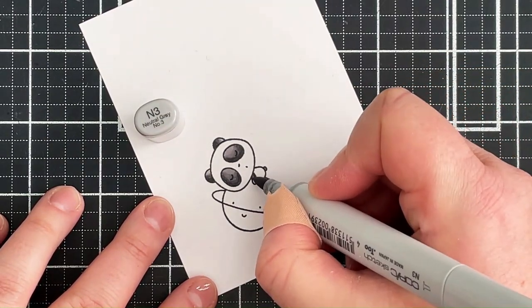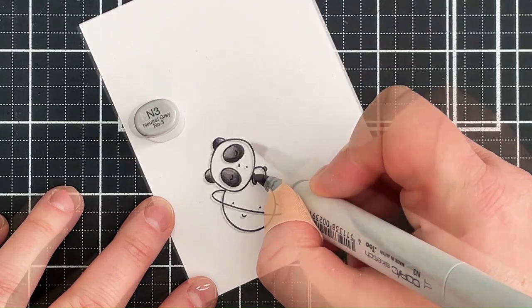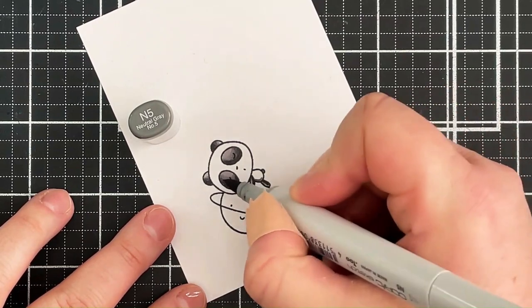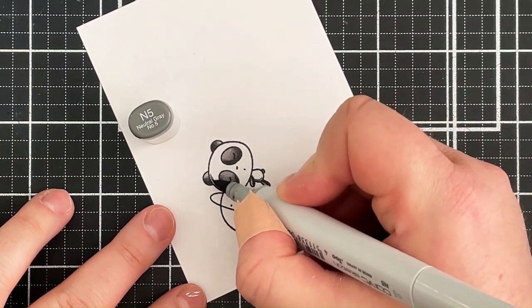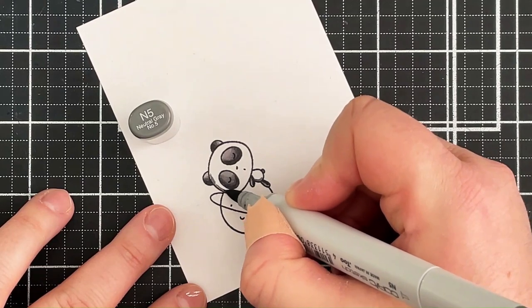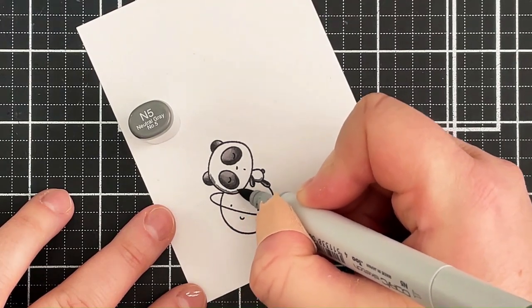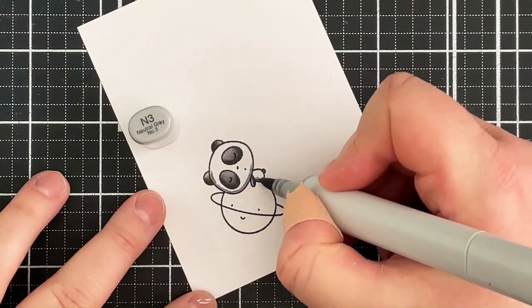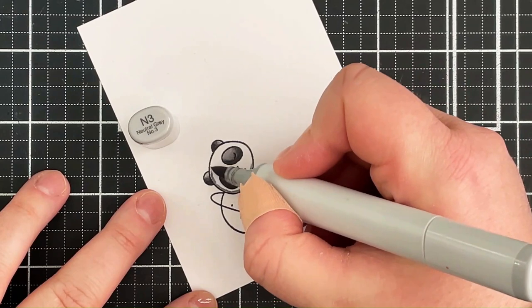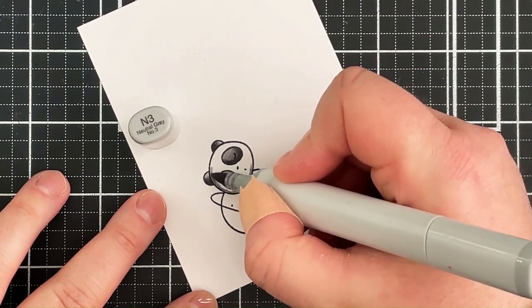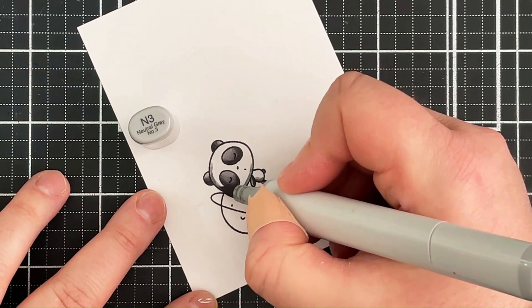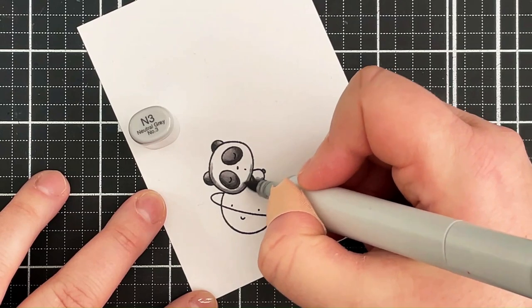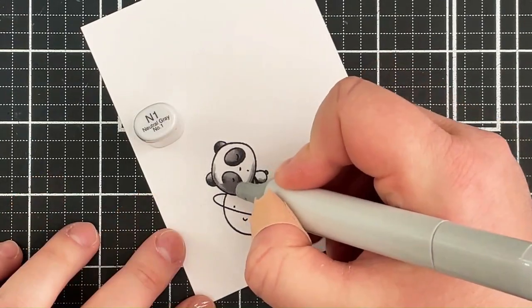So just coloring in the arms and the legs there, or one arm and one leg because that's all you can see. For the white area I don't want to leave it completely white because it would look a little bit flat if I did. So I'm going to start off by adding in some shadow with my darkest shade which is the N5. I didn't necessarily need to go this dark, I think I would have been okay with the N3, but I quite like having it quite a little bit darker because sometimes when you add the lighter colors on top it does bleach it out a little bit.